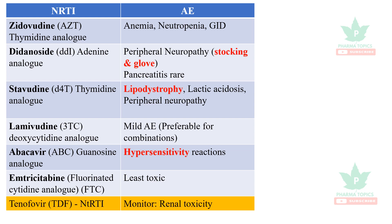The next drug is didanosine, an adenine analog. The most important adverse effect is peripheral neuropathy — remembered as 'stocking and glove neuropathy,' meaning numbness and tingling in the areas covered by gloves and socks. It can also rarely cause pancreatitis.